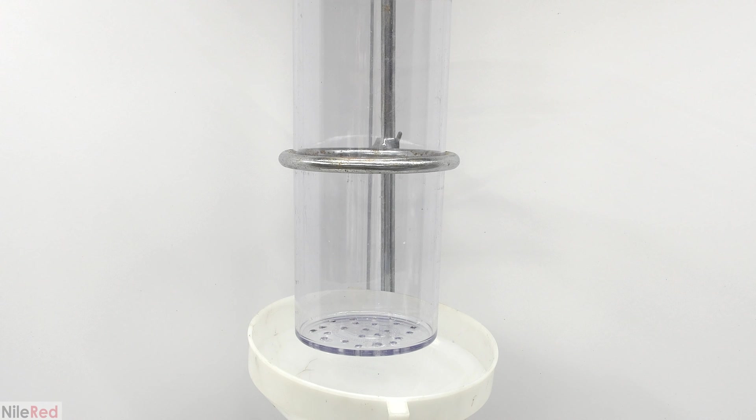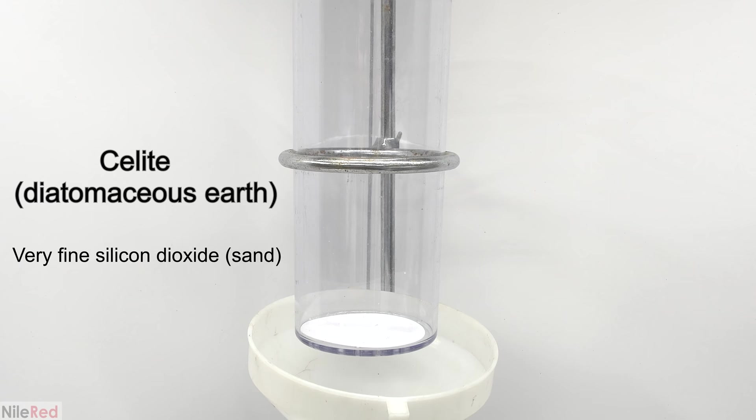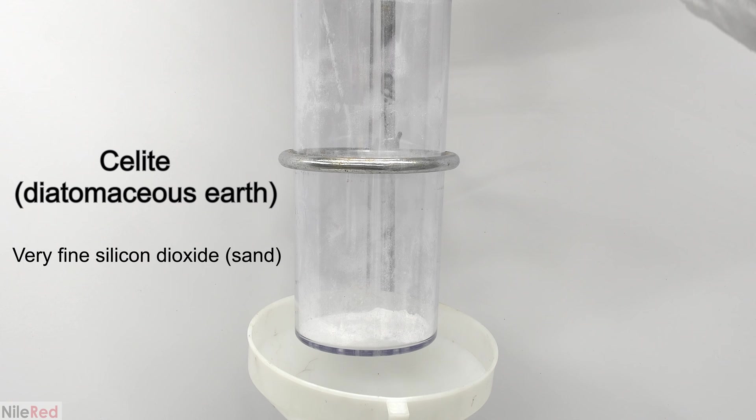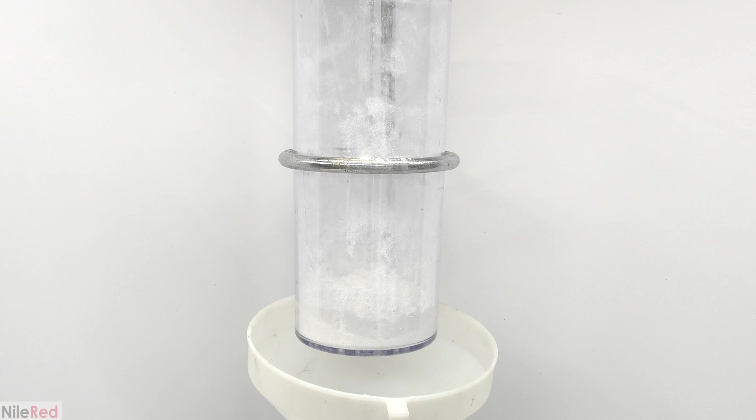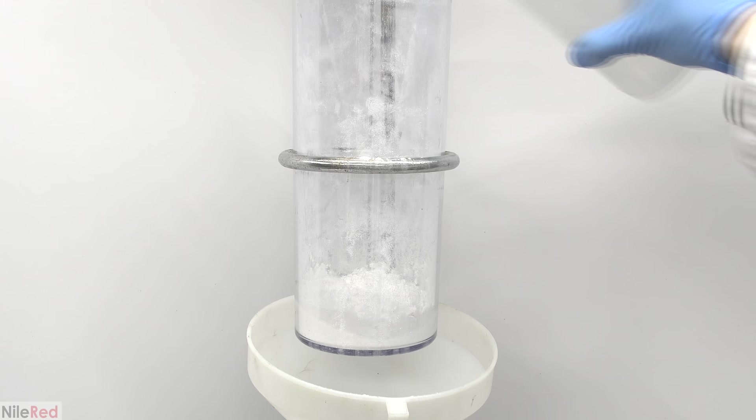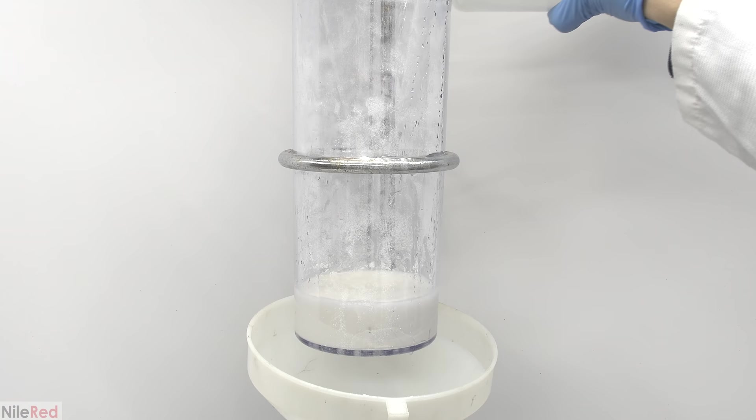Later the next day, I set up a makeshift filter. I drilled a bunch of holes in the bottom of a plastic container, and then I dropped in a filter paper. On top of the filter paper, I then dumped in a whole bunch of celite. It's basically just very fine silicon dioxide, and it's actually very important to use here. It's used to trap very small particles of mercury sulfide that would normally just pass right through a filter paper. On top of this, it also helps prevent the filter paper from clogging up.